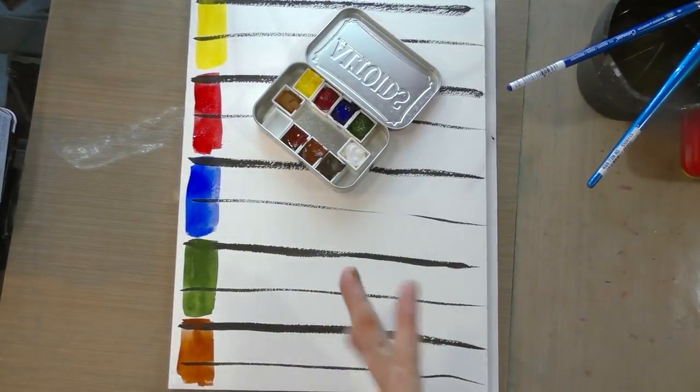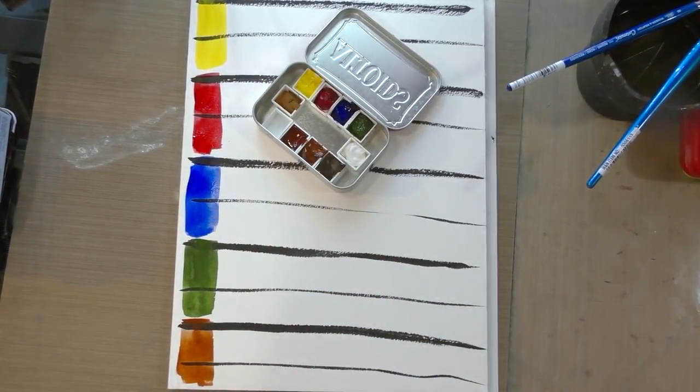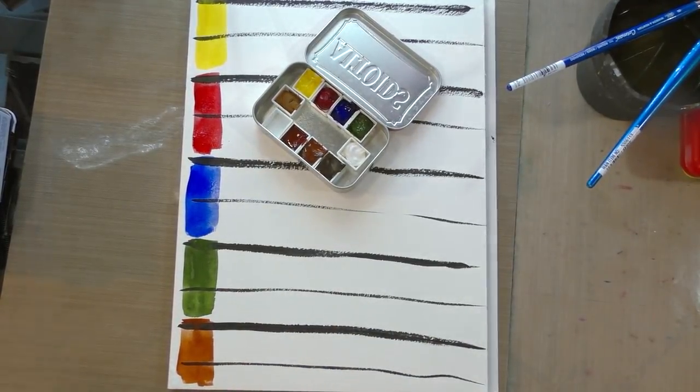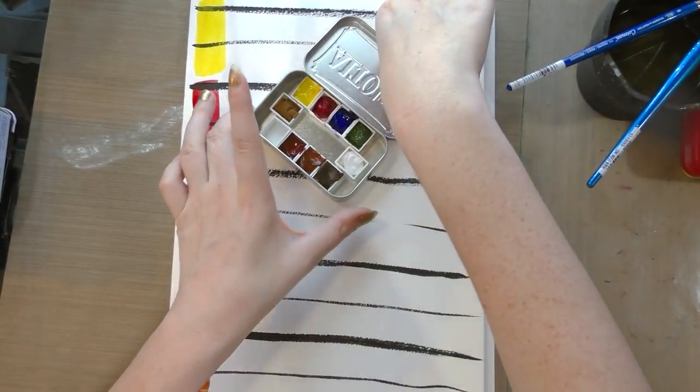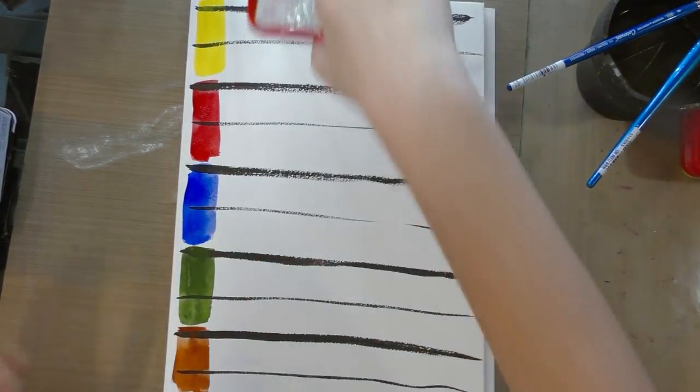The M Graham half pans still go down really luscious. The sap green is a little bit more opaque than I remember it being the first time we swatched. But I'm able to get a much even layer of color than I did in my first swatch video. So that's the M Graham paints.